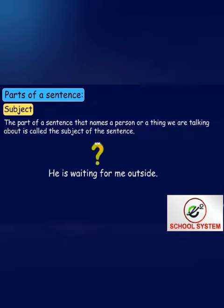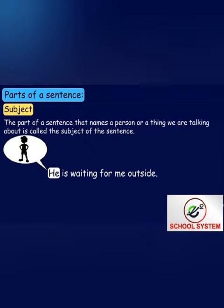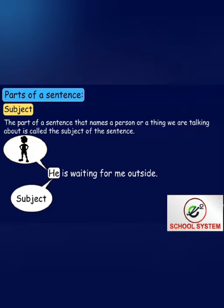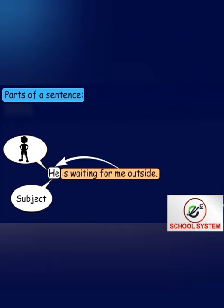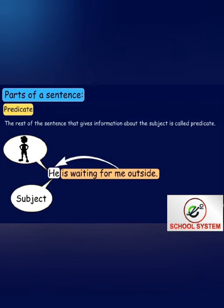Here, who are we talking about? We are talking about 'he.' That is, 'he' is the subject of the sentence. And the rest of the sentence is talking about the subject. The rest of the sentence that gives information about the subject is called the predicate.